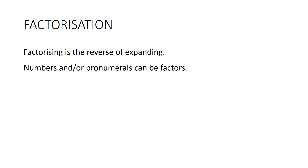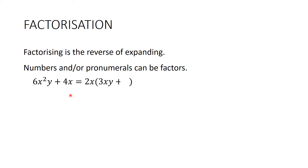Factorising is the reverse of expanding, and we can take out numbers, pronumerals, or signs. For example with 6x²y − 4x: I have a common factor of 2 and also x, so I bring 2x out the front. Then 2x times what makes 6x²y? I need 3xy. And 2x times what makes 4x? I need 2. So the answer is 2x(3xy − 2). We can always expand to check.